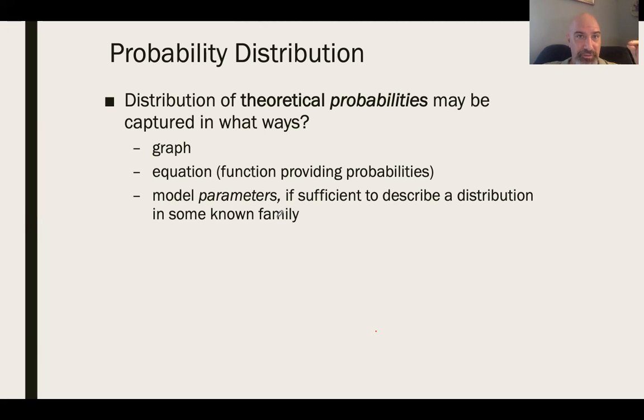Equation, which is one of the trickier things to think about, especially in a not very math-heavy course. And model parameters, if we have some known family like a normal distribution, a binomial distribution. Sometimes this is why we use these named distributions because it simplifies the act of describing a probability distribution into naming one, two, or more parameters that fully characterize that distribution and give us all the information we need.